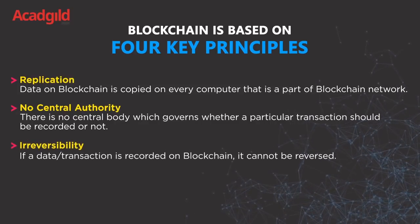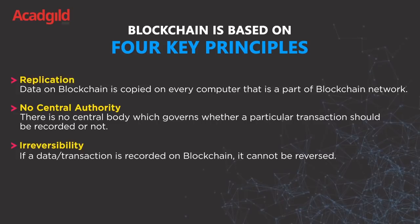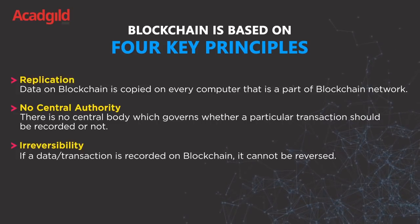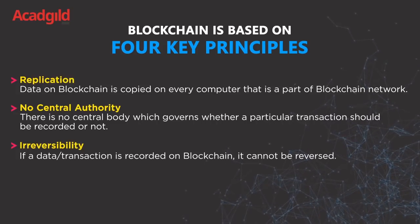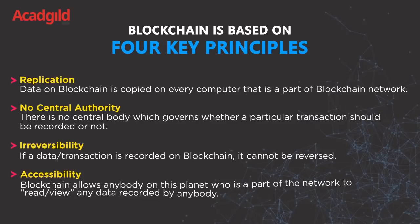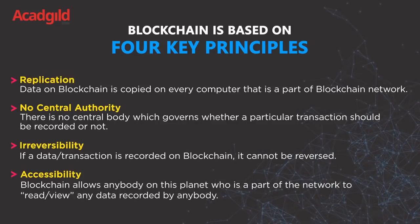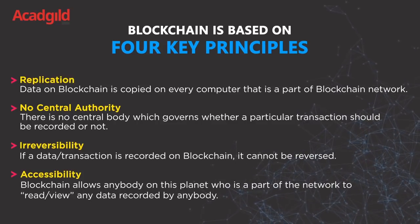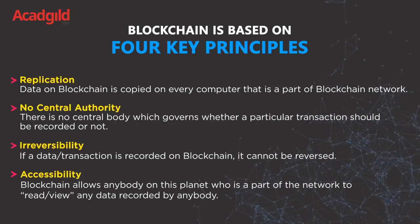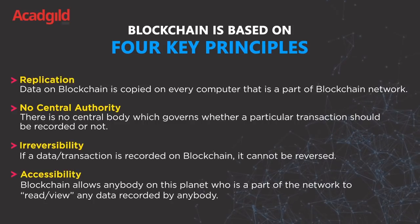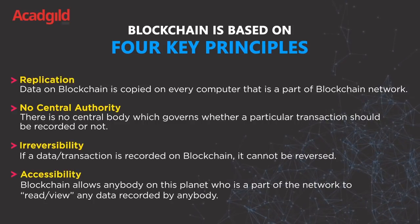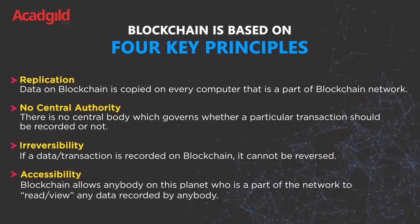The third is Irreversibility — if a data or a transaction is recorded on blockchain, it cannot be reversed. The fourth is Accessibility — blockchain offers anybody on this planet who is a part of the network to read or view any data recorded by anybody.